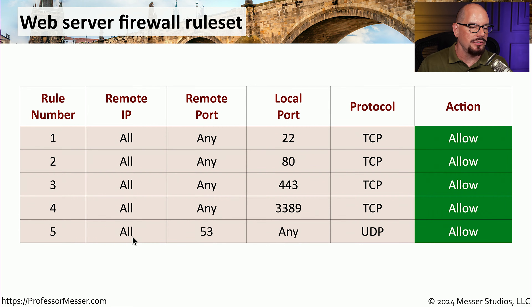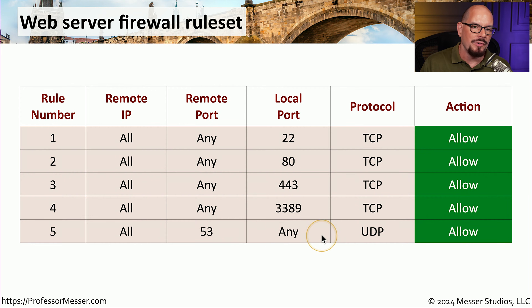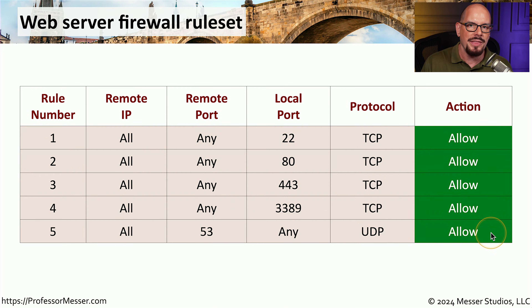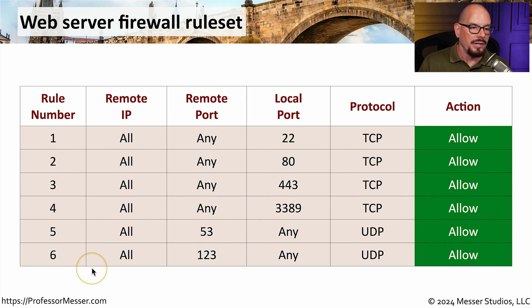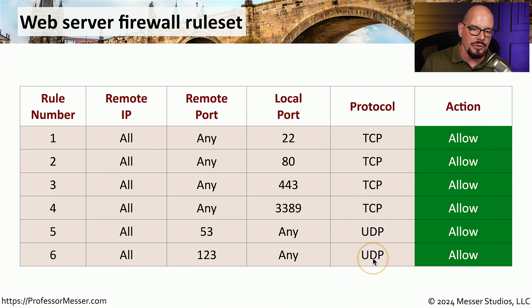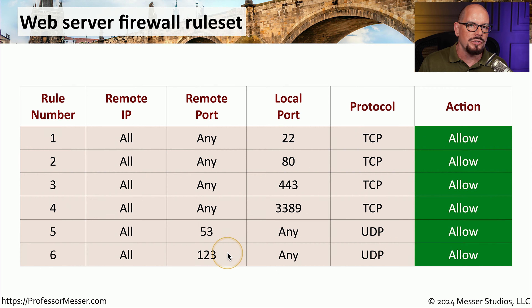This server must also make DNS requests, because in rule five, we're able to connect to any remote IP address over port 53 from any local port on this device using UDP — and that action is allowed. Similarly, rule six allows connection to any remote IP address using port 123 over UDP from any local port. Port 123 is the Network Time Protocol, or NTP.